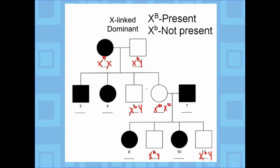Using the parents and children, we figure out the genotypes. For a shaded male — XY — the trait is present, so he has X capital B, Y. For a shaded female, I know she has at least one capital B. The X capital B had to come from this parent, and the father has to contribute X little b — so I've been able to determine that genotype.